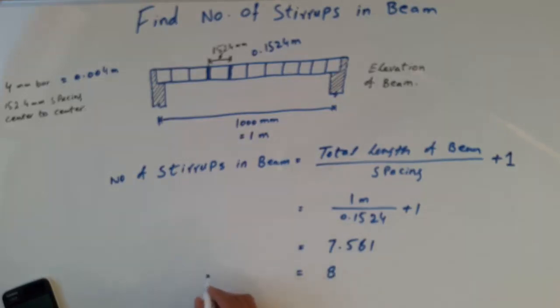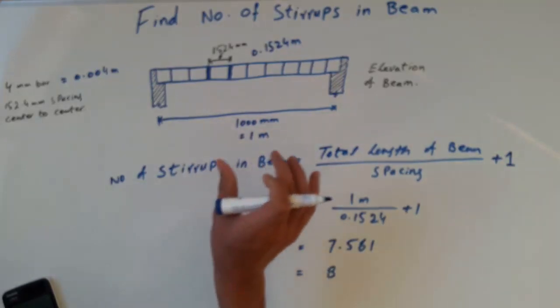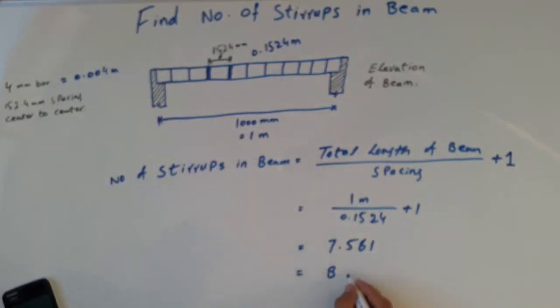So the total stirrups we will use in a 1 meter beam are 8 bars. We write this as 8 bars at 0.004 meter diameter.